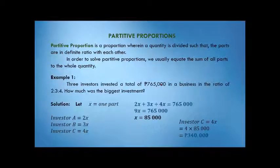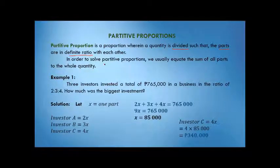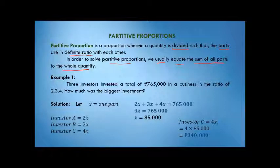Next, we have partitive proportion or variation. Partitive proportion is a proportion wherein a quantity is divided such that the parts are in a definite ratio with each other. For example, a single quantity is divided into several parts, and each part is in ratio to the others. To solve problems involving partitive proportions, you equate the sum of all parts to the whole quantity.